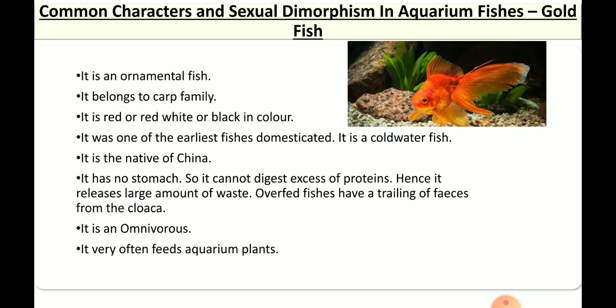It is also an ornamental fish. We have different types of coloration: red, white, and black in color. It was one of the earliest fish to be domesticated, and it is a cold water fish native from China. It has no true stomach, and it cannot digest excess amounts of protein, hence it releases large amounts of waste — making it a high feces-producing animal inside the aquarium. So be careful when feeding; it is better to feed very little so it can adjust to the environment.